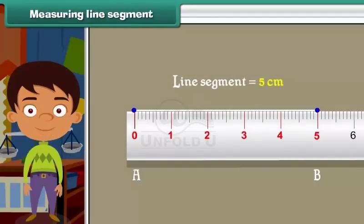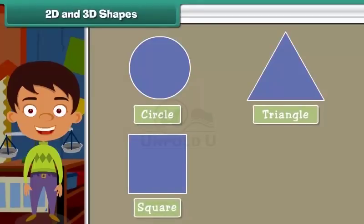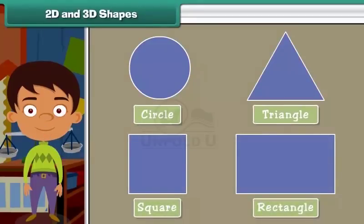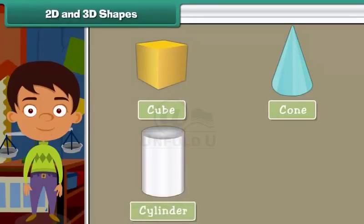2D and 3D shapes. Now let us talk about two-dimensional or 2D shapes. Some 2D shapes are circle, triangle, square, and rectangle. Some three-dimensional or 3D shapes are cube, cone, cylinder, and sphere.